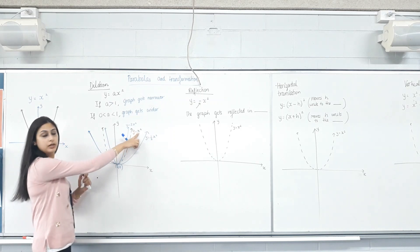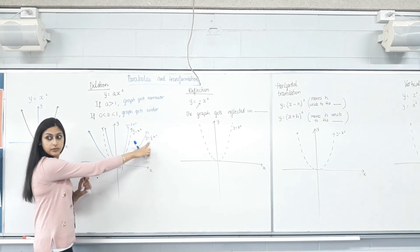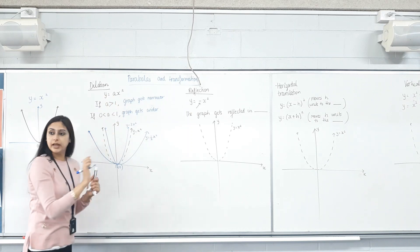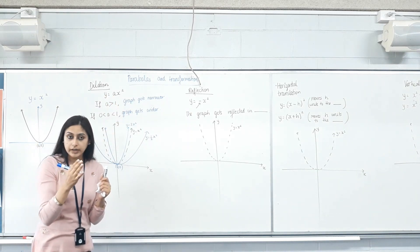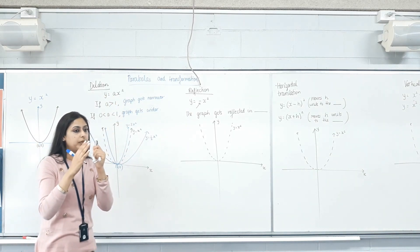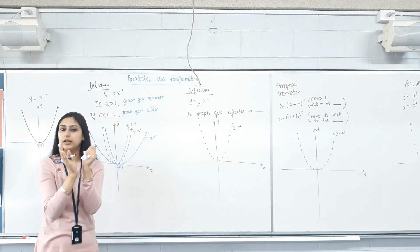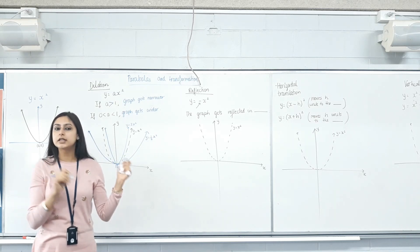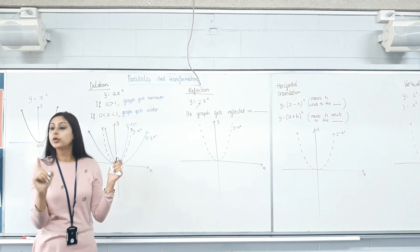If it's 1x squared, a is 1. If it's half x squared, a is half. So if the number you're multiplying x squared with is greater than 1, the graph gets narrower. If the number's positive but less than 1, the graph gets wider. Did the turning point change? No.